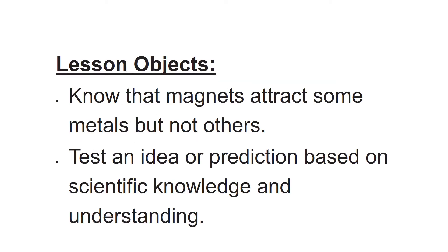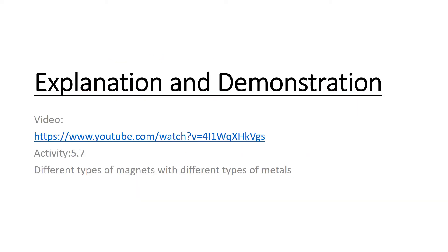Today's lesson objective: by the end of this chapter you must know that magnets attract some metals but not others, how many types of metals there are, and how to test an idea or prediction based on scientific knowledge and understanding. There is a video link here — you can click it to get an idea of where magnets come from, whether they are natural or man-made, and how many metals are attracted by the magnet.